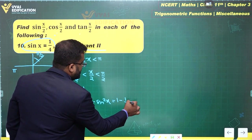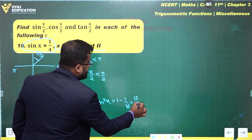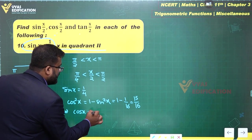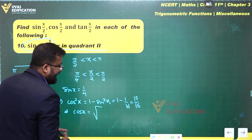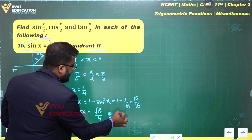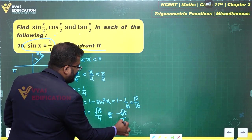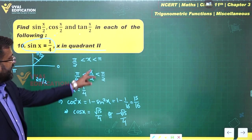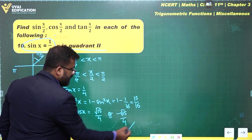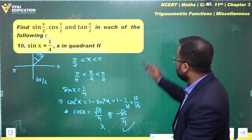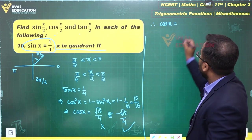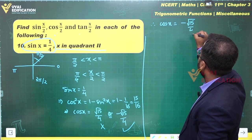cos²(x) = 1 − sin²(x) = 1 − 1/16 = 15/16. Therefore cos(x) = ±√15/4. Since x is in the second quadrant, sin(x) is positive but cos(x) is negative, so we take cos(x) = −√15/4.